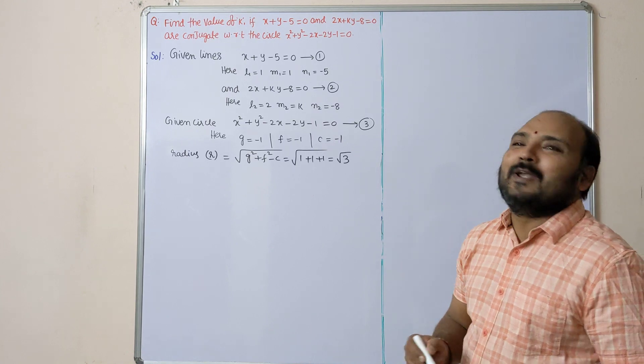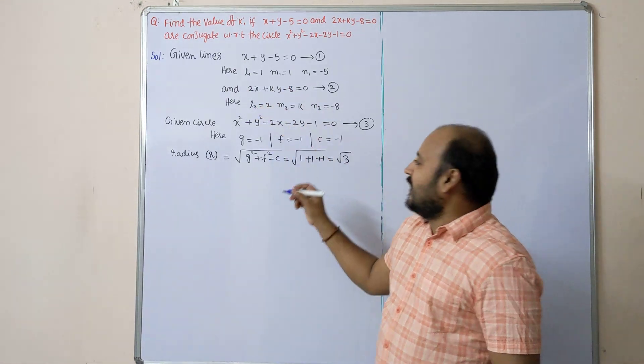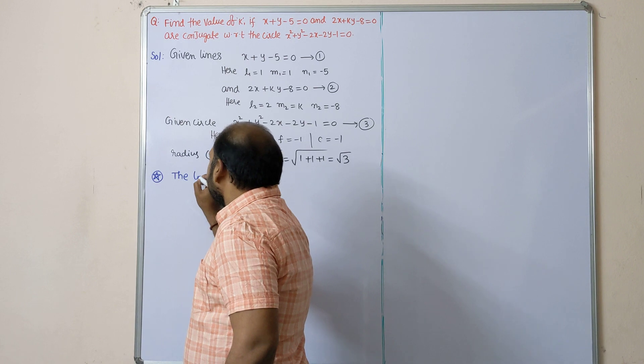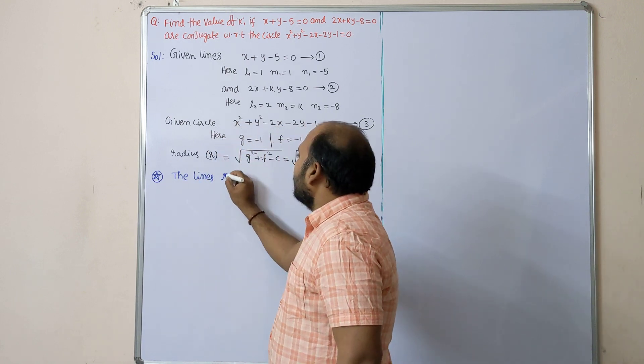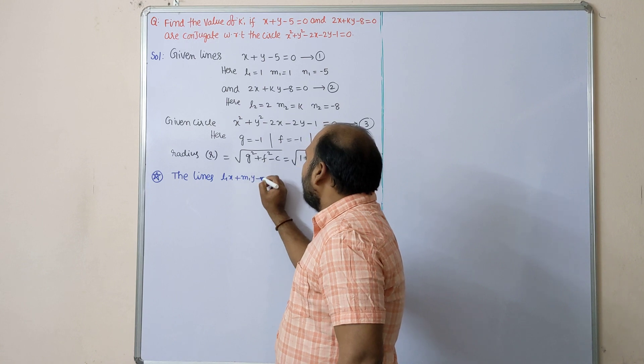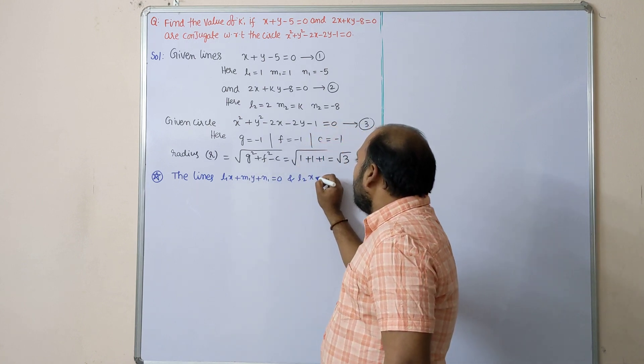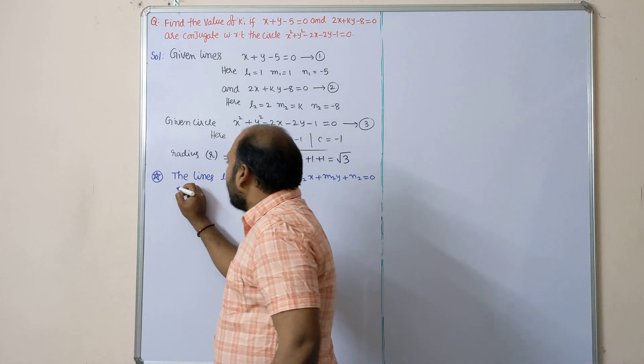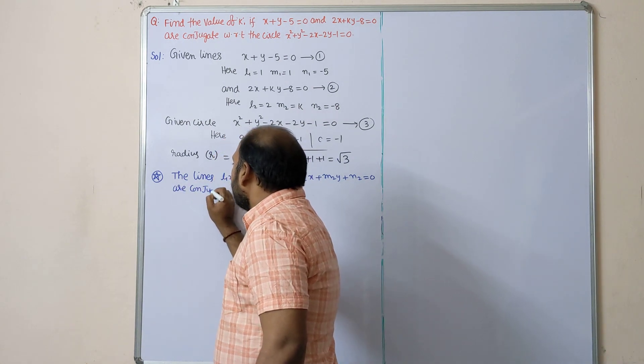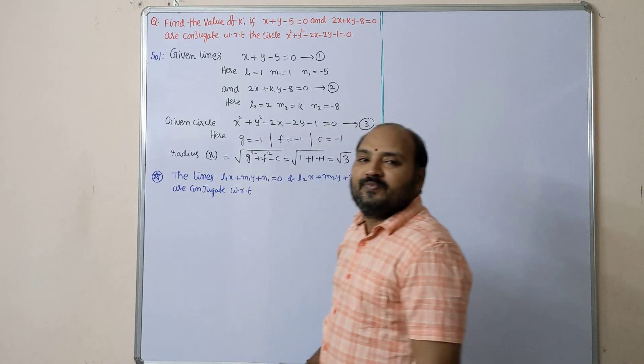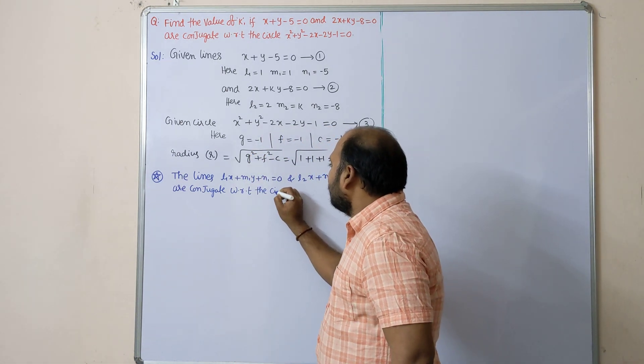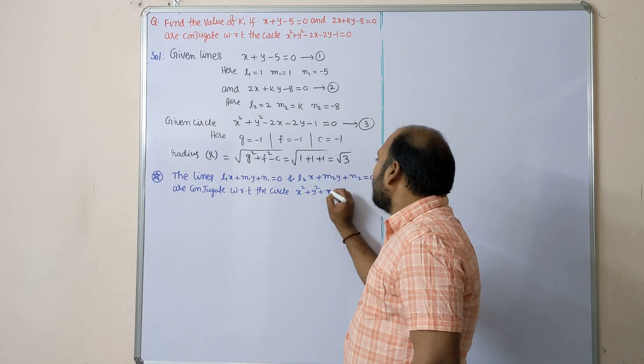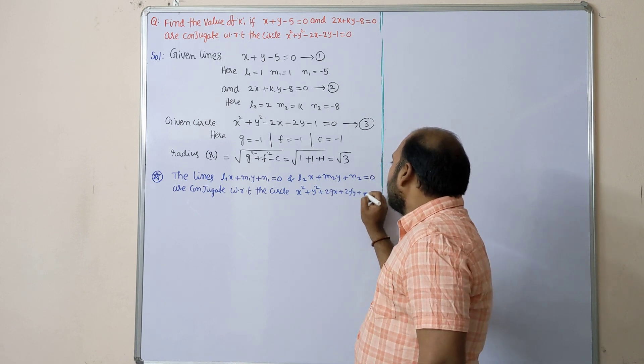Here only important point. The two lines l1x + m1y + n1 = 0 and l2x + m2y + n2 = 0 are conjugate with respect to the circle s = 0, otherwise x² + y² + 2gx + 2fy + c = 0, if and only if...